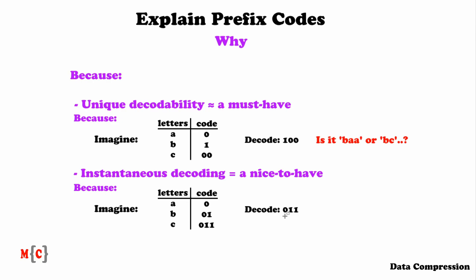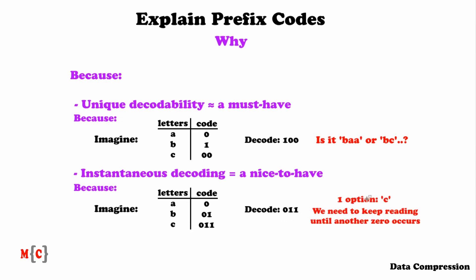Knowing that the first bit is a 0, we know that there are three codewords that could correspond to this, so it can either be A, B, or C. Now if we look at the next bit, we see that it is a 1, so we know it will either be B or C. We now have one bit left, which is a 1, so now we know that it is C — there is only one option left and we can decode the entire string as C.